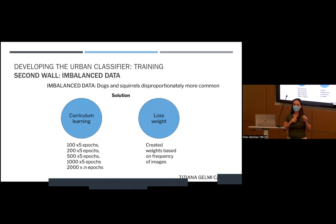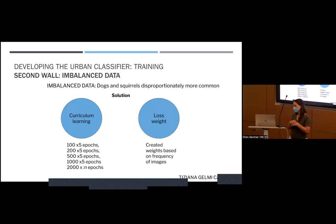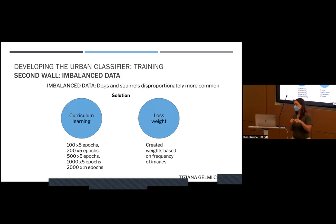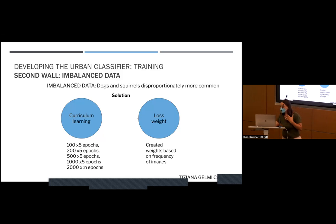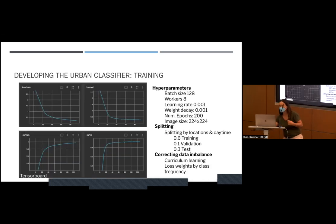We also fixed the loss weights based on the frequency — how many pictures we had per class. That also helped a lot. I'm guessing this will get even better when we have around 2000 opossums instead of 400, because then we'll have the same number per class.